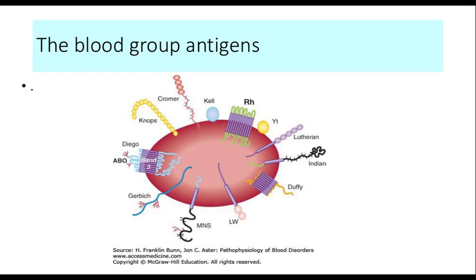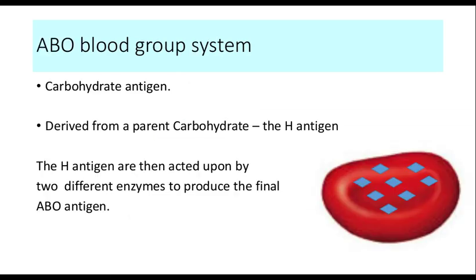Briefly, the RBCs express various kinds of proteins or carbohydrates on their cell membrane. These can be used for classifying the RBCs into various blood groups. The ABO blood group system is a system based on carbohydrate antigens. They are derived from a parent carbohydrate, the H antigen.